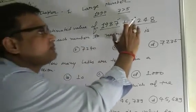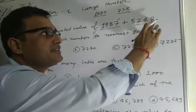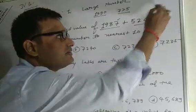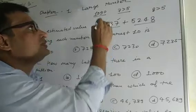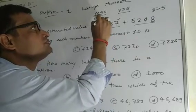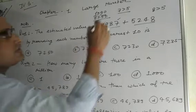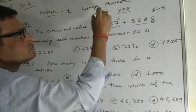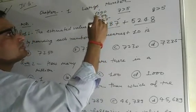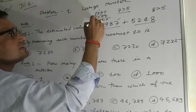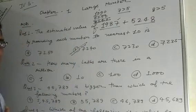Now the next number, 5,248. We check the units place digit, which is 8. Since 8 is greater than 5, we add 1 to 4 and get 5,250. Now we add 1,990 and 5,250: 0 plus 0 is 0, 9 plus 5 is 14 carry 1, 10 plus 2 is 12 carry 1, 5 plus 1 is 6, and we get 7,240. Therefore, option B is the correct answer.